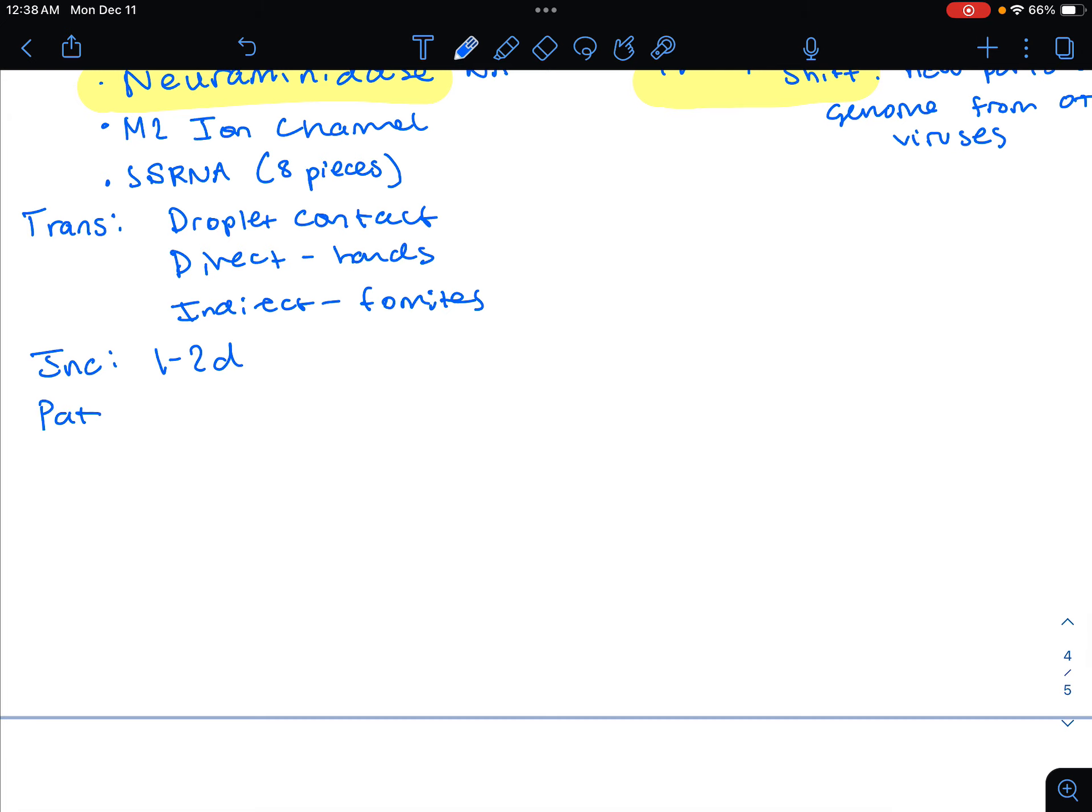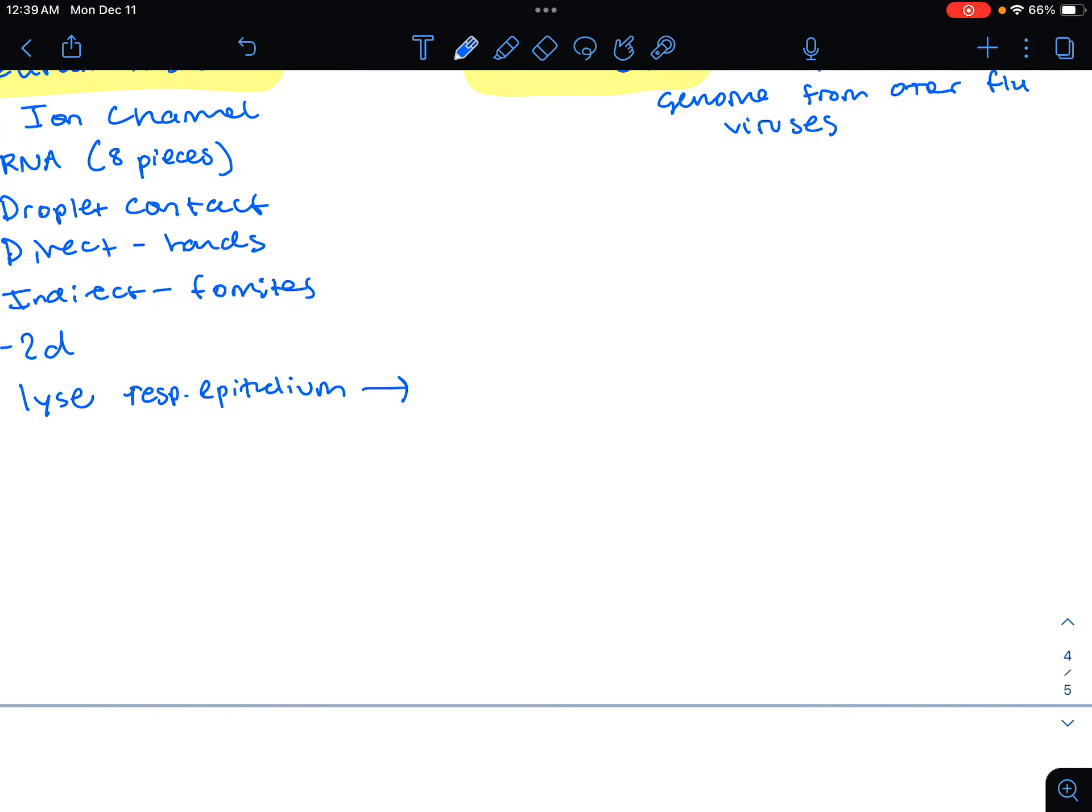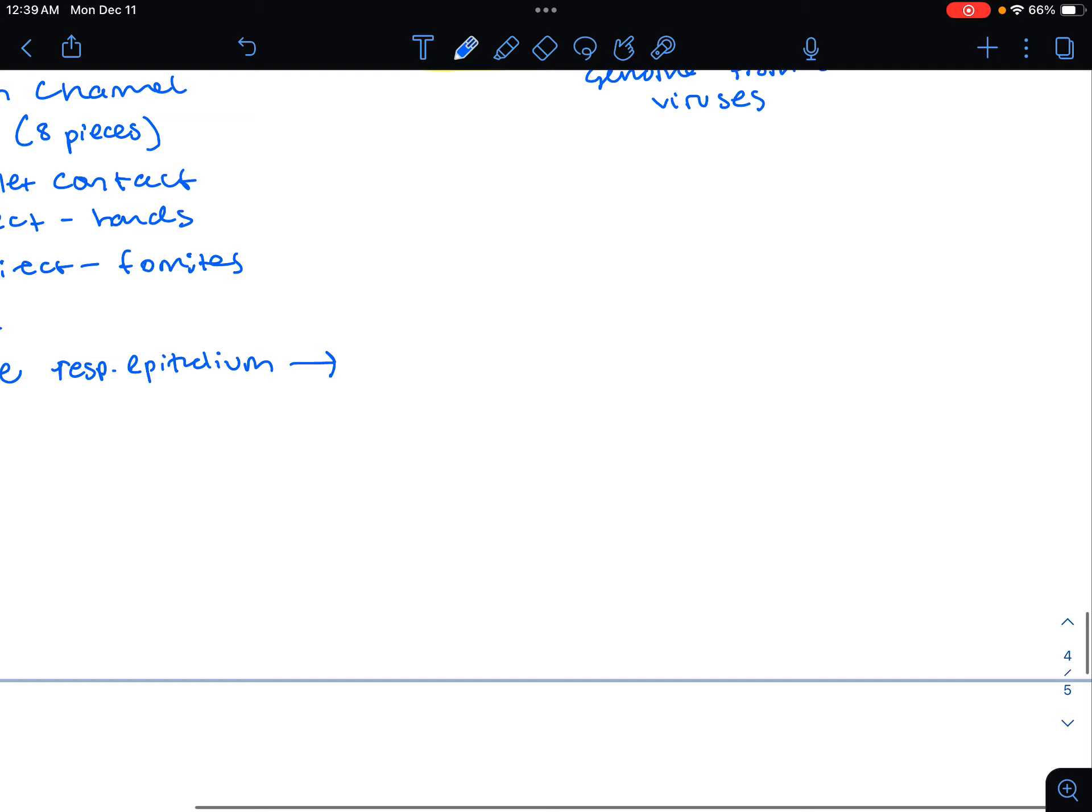Pathogenesis: we're going to infect the respiratory epithelium and lyse it. Once we lyse that epithelium of the respiratory system, we're going to have secondary infections such as pneumonia, and this is going to be damage to that mucociliary escalator.